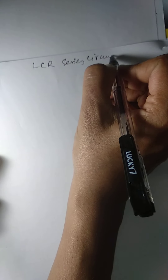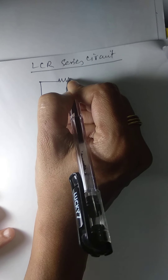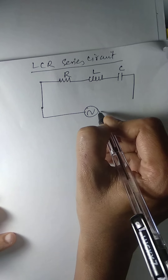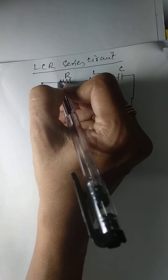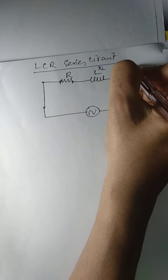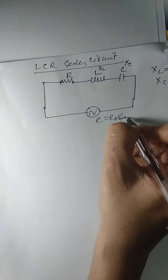Now we are going to the LCR series circuit. We have L, C, and R connected in series with an AC supply. The potential difference across R is V = IR, the potential difference across the inductor involves XL = Lω, and across the capacitor XC = 1/(Cω). The instantaneous EMF is E = E₀ sin(ωt).